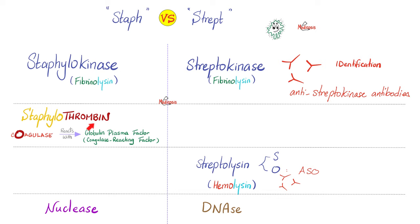But staphylokinase is unique to Staph — Strep does not have one. Conversely, streptolysin or hemolysin — such as streptolysin-S and streptolysin-O, against which you can make your ASO antibodies — are unique to Streptococcus. Staph does not have them. Staph has nuclease to break down your nucleus, while Streptococcus has DNase to break down your DNA, which is in your nucleus.